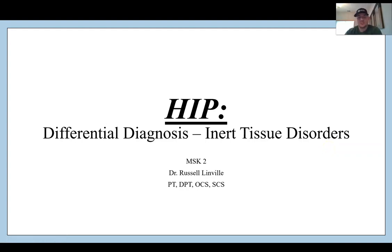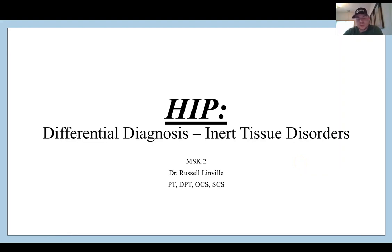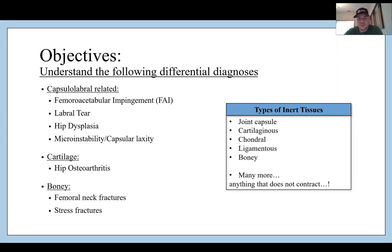Hello everyone and welcome back. It's good to be doing a lecture again for you guys. This is hip differential diagnosis looking at inert tissue disorders. We'll be looking at other tissues such as contractile and nervous system to peripheral nerves in the hip in later lectures, as well as postoperative diagnoses with the hip. So without further ado, let's get into the inert tissue disorders here.